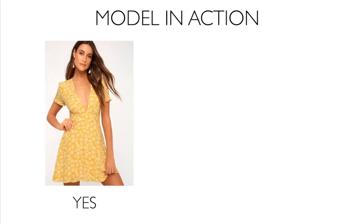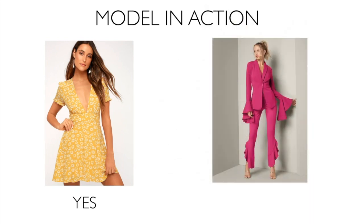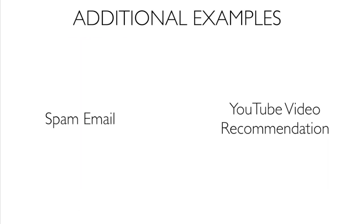For example, if you show it an image of a dress, it looks at the model created based on the features you defined — how a dress is supposed to look — and it will tell you, yes, this is a dress. But if you show it an image that doesn't follow the typical model or features defined for a dress, it will tell you no, this is not a dress. That's how machine learning makes predictions.